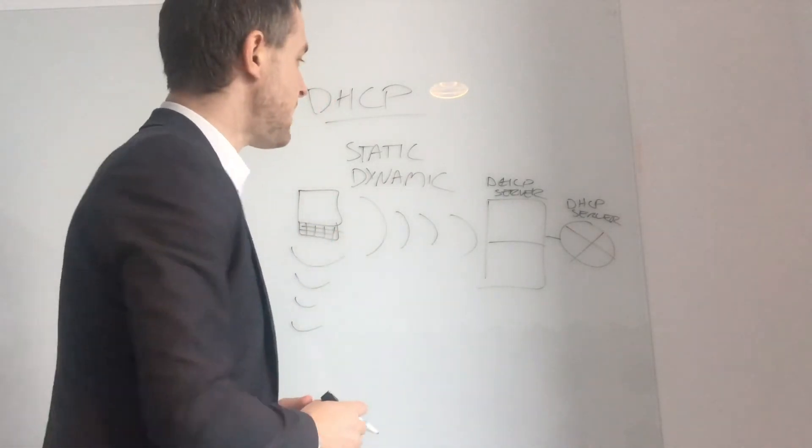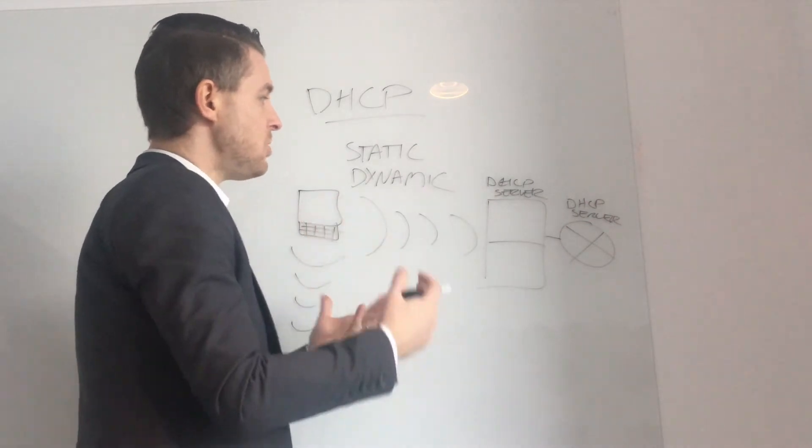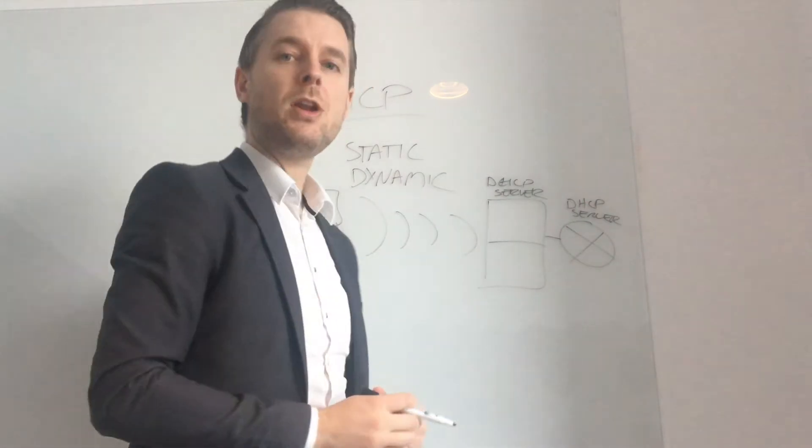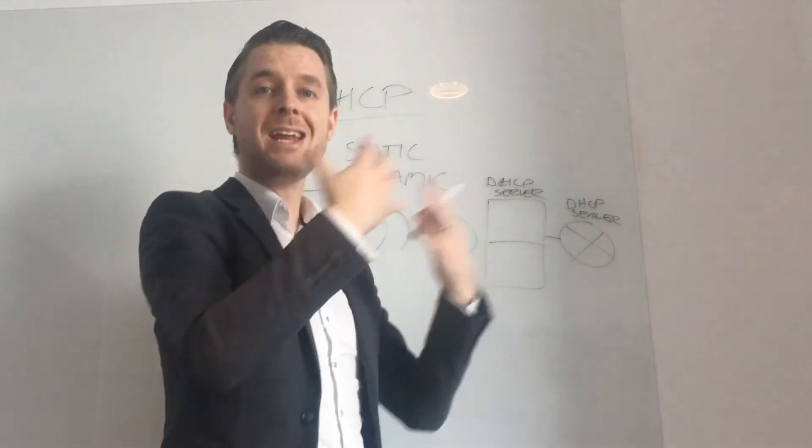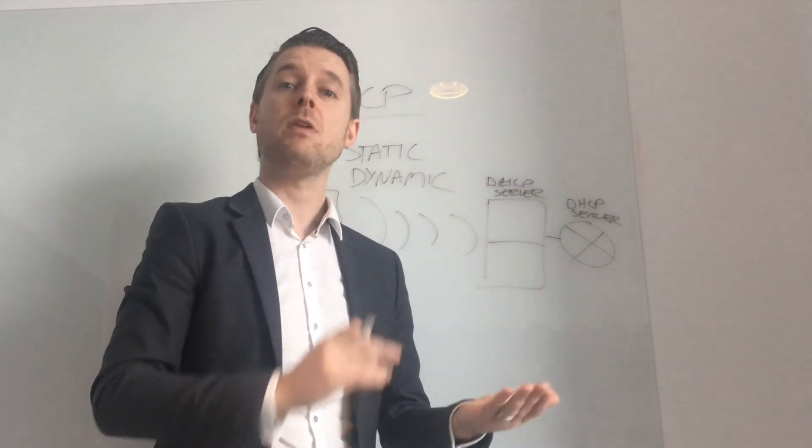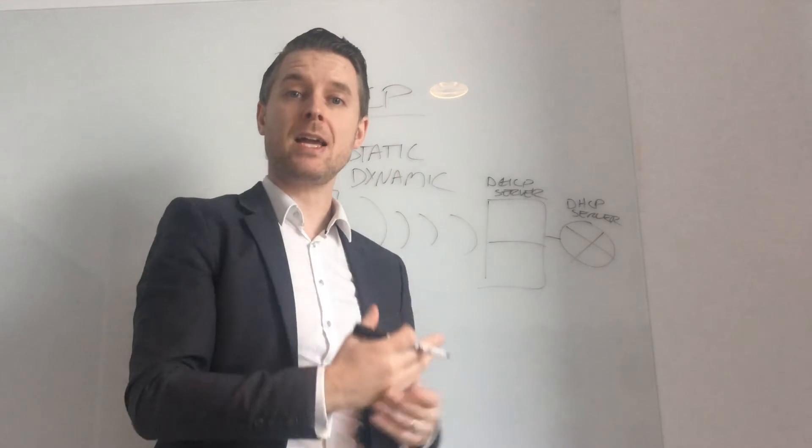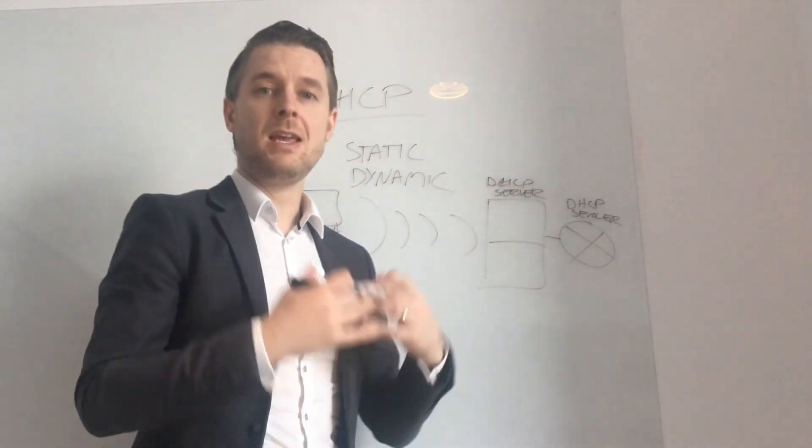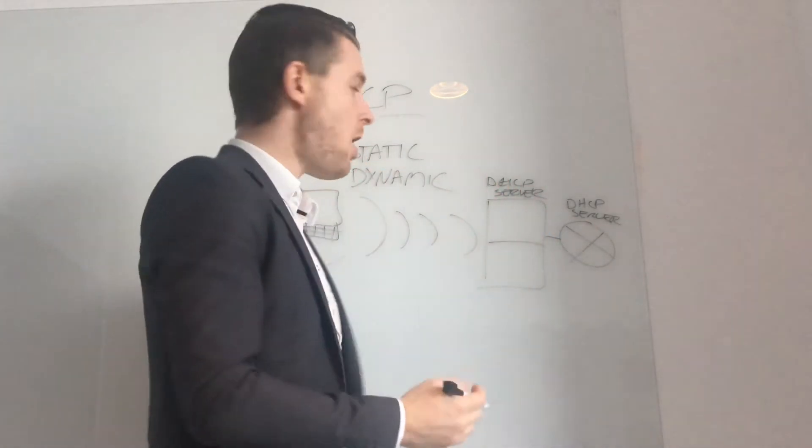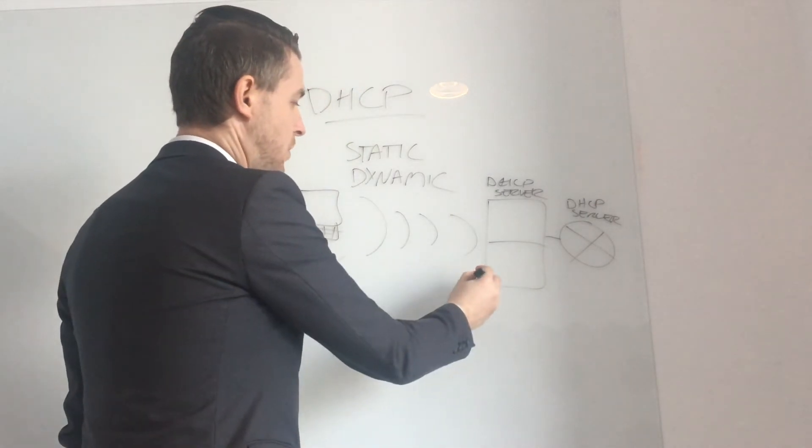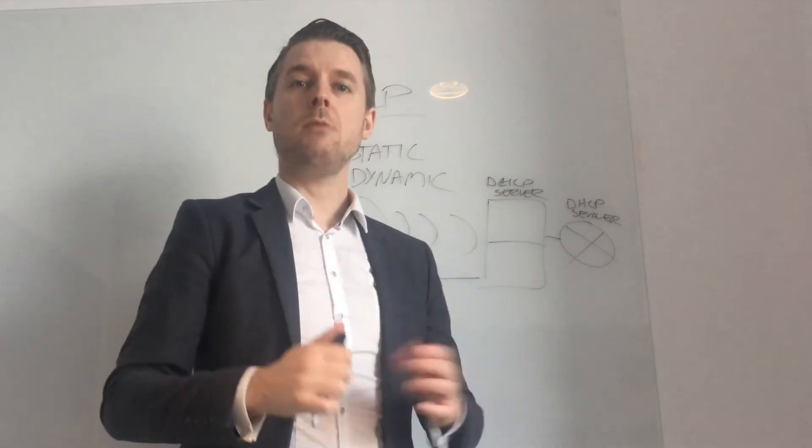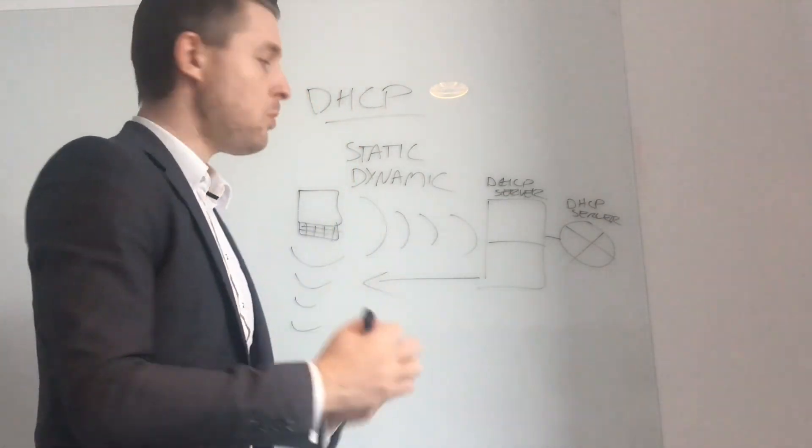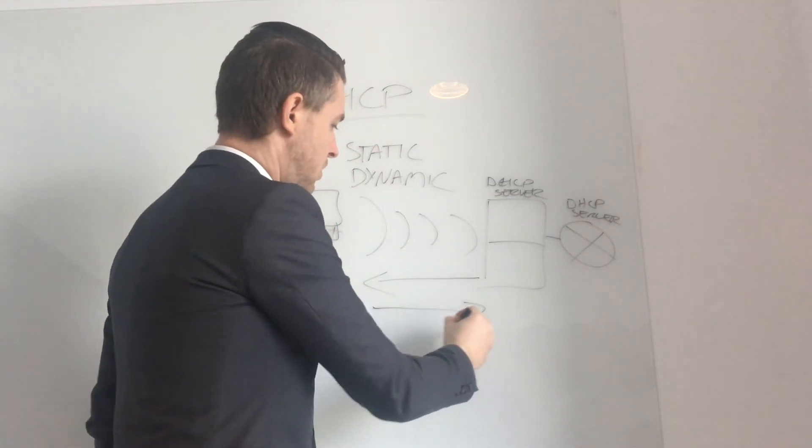What will happen at that stage is this server will essentially identify that this computer is now wanting an IP address. So the computer will broadcast out a packet with its name and with its MAC address. The DHCP service will say, yep, I am a DHCP server. I can give you an IP address. It acknowledges it, sends it back to the computer. The computer then says, great. I would like an IP address. So it makes a request.